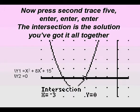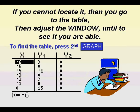The intersection is the solution, you've got it all together. If you cannot locate it, then you go to the table, then adjust the window until you are able to see it.